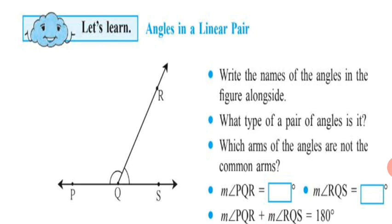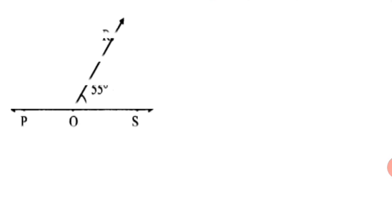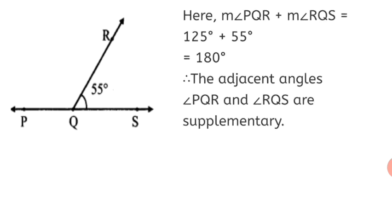Once you measure them, Angle PQR measures 125 degrees and Angle RQS measures 55 degrees. When you add them, the sum is equal to 180 degrees. You have learnt that two angles whose sum is 180 degrees are called supplementary angles.